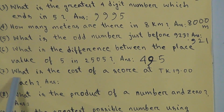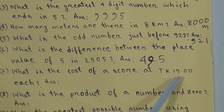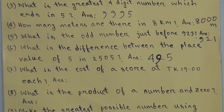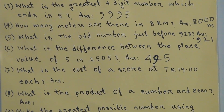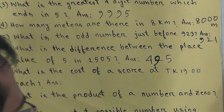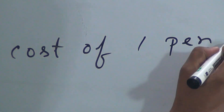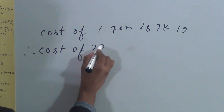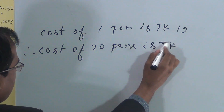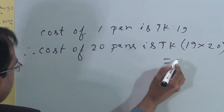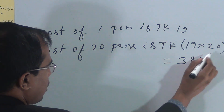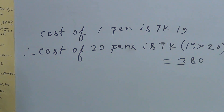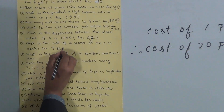Question 7: what is the cost of a score of fans at Tk 19.00 each? One score means 20. So we need the cost of 20 fans. Cost of one fan is Tk 19. Therefore, cost of 20 fans = 19 × 20 = 380. The answer is Tk 380.